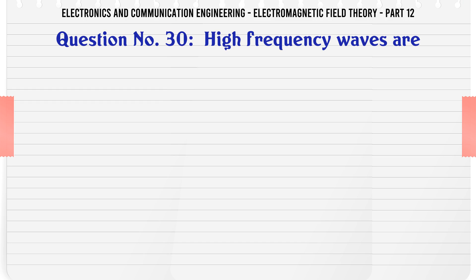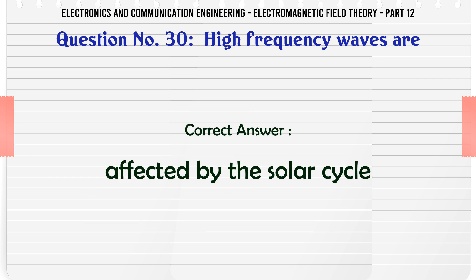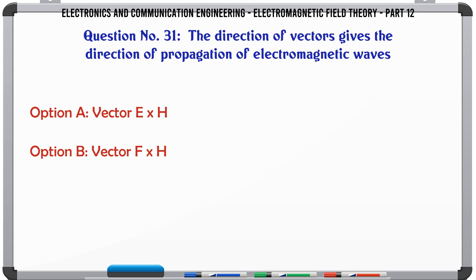High-frequency waves are: A. Absorbed by the F2 layer, B. Reflected by the D layer, C. Affected by the solar cycle, D. None of the above. The correct answer is Affected by the solar cycle.